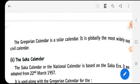The Gregorian calendar is a solar calendar. It is globally the most widely used civil calendar. So this is what the Gregorian calendar is all about.